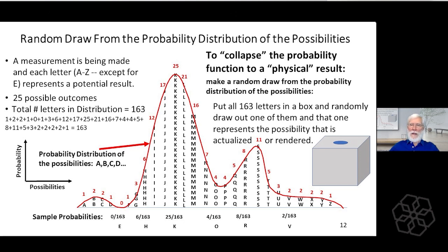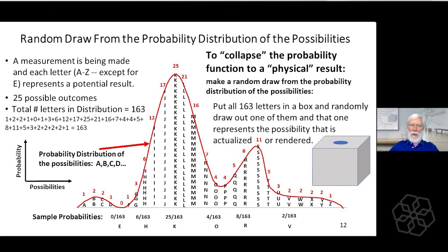The random draw from this probability distribution works like this: we take that one A and throw it into this box — there's a little hole in the box. We take two Bs and throw two Bs into that box. Think of them as little note cards — one with an A on it, two note cards each with a B. Then we put two Cs in, one D, no Es, one F, three Gs, six Hs, twelve Is, seventeen Js, twenty-five Ks, and so on.